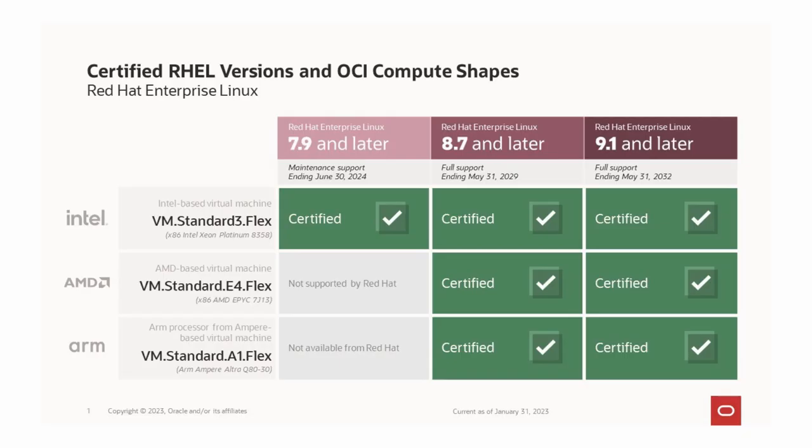OCI is now a member of Red Hat's Certified Cloud and Service Provider Program and can be found in the Red Hat Enterprise Linux Ecosystem Catalog. This means you can now run the latest version of RHEL 7, 8, or 9 on OCI's most popular current generation of virtual machine shapes and your choice of Intel, AMD, or ARM processors, while maintaining access to Red Hat's support system and knowledge base through your RHEL subscription.